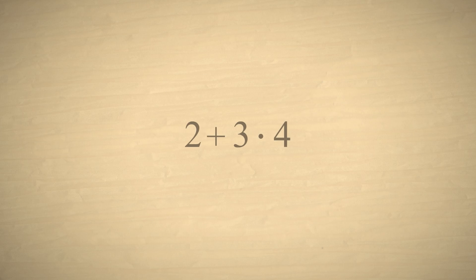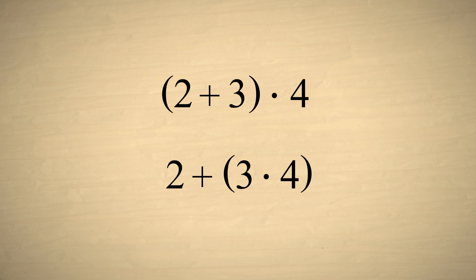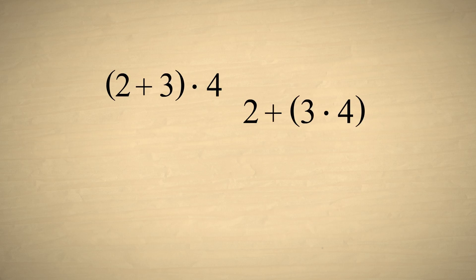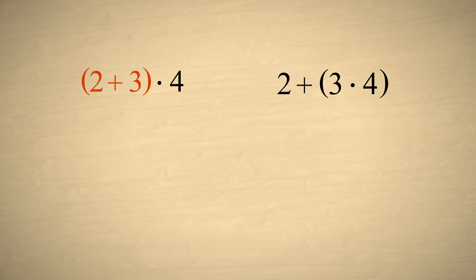But what if we have a group of numbers which are added and multiplied? Does the associative property still apply? Let's take an example where we group 2 plus 3 times 4 in two different ways. When we group numbers in parentheses, the operation inside the parentheses is performed first. So when 2 plus 3 is written in parentheses, we do the addition first, and then we multiply the result times 4.